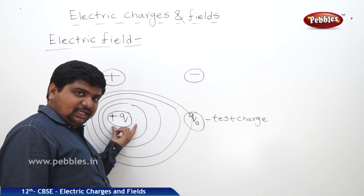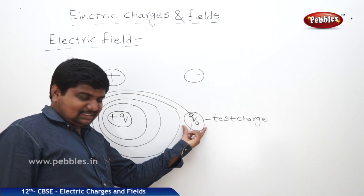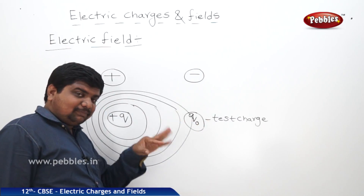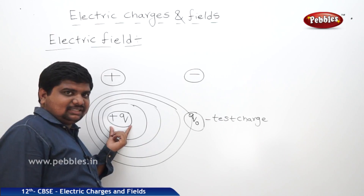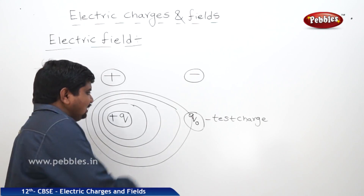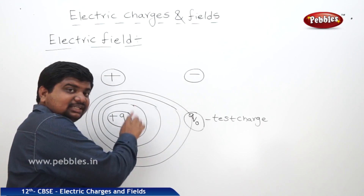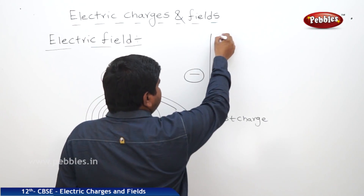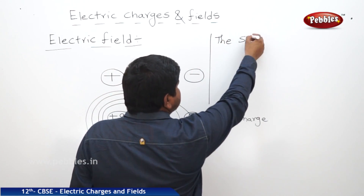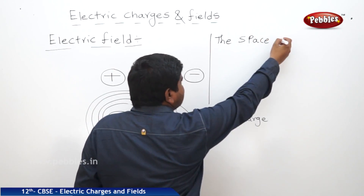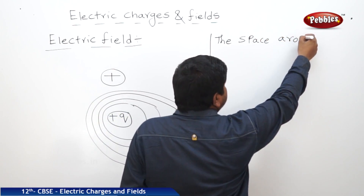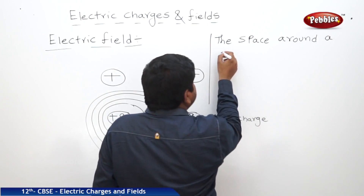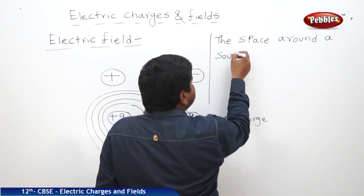This is the source charge. This is the test charge. This test charge is experiencing force of attraction or repulsion due to this source charge. The space around the source charge is called electric field. The space around a source charge where a test charge experiences the force of attraction or force of repulsion is called electric field.